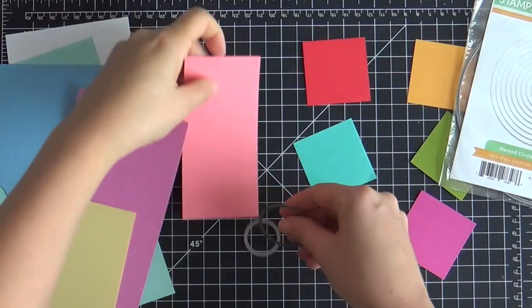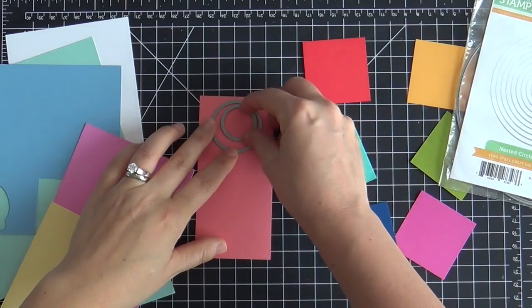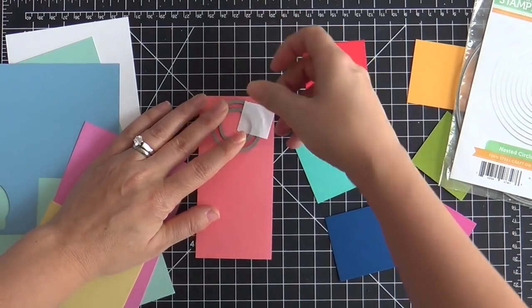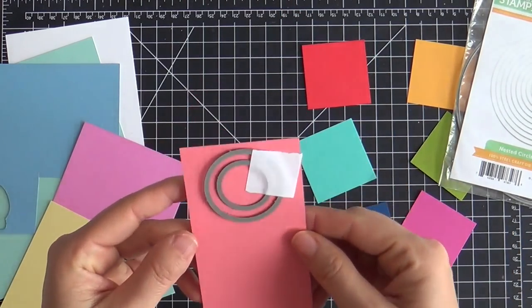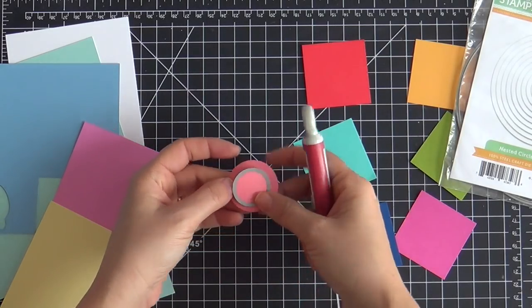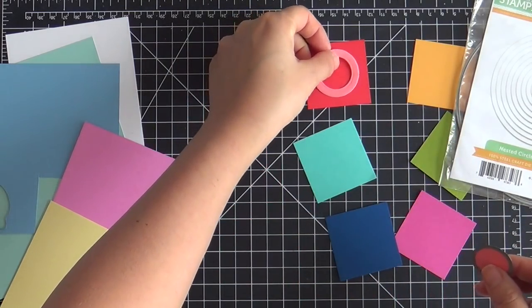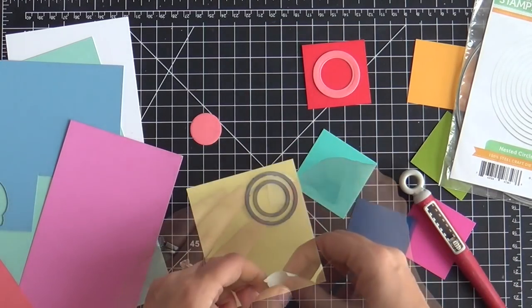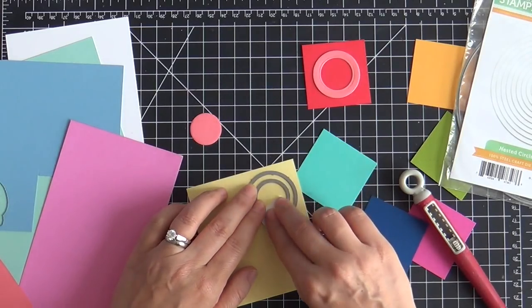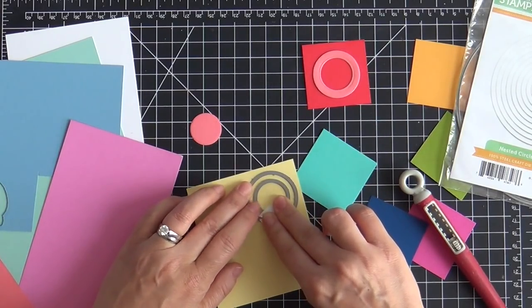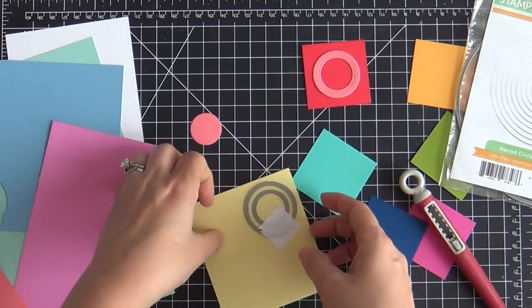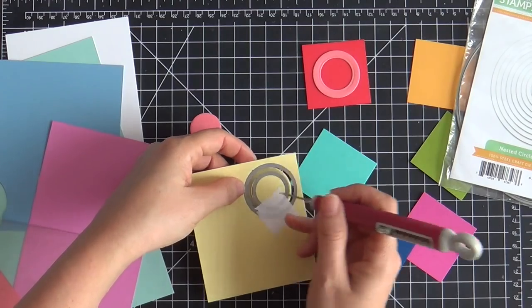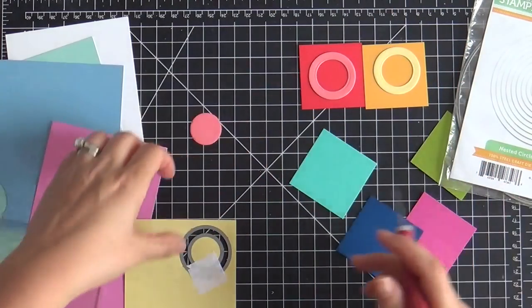Now for the circle part, I'm using the Simon Says Stamp nested circle dies. These are the two smallest circles in the die set and I put those together to make this wreath shape ring. So I'm gonna make six rings for the six squares and I'm trying to be as precise as I can, but if I'm being honest with you, basically the whole time I'm winging it like I do in life.